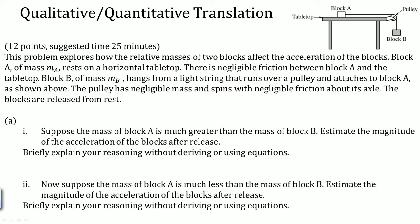For a QQT, all QQT problems start with a 12-point distribution with a suggested time of 25 minutes. There's always a scenario given to you. The first part says briefly explain your reasoning without deriving an equation. In this problem, there is a hanging mass and a mass on a table, with friction between block A and the tabletop. The pulley is an ideal pulley.